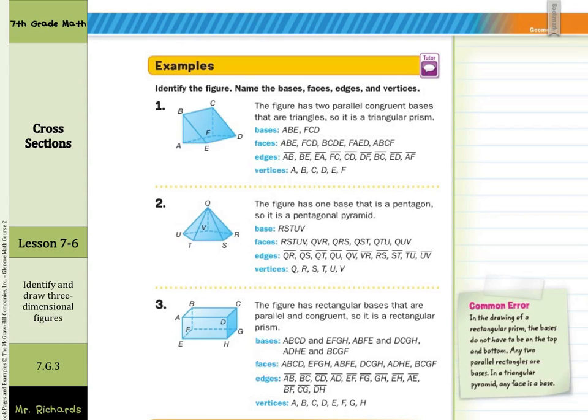So, one thing you're going to be asked to do in this lesson is to identify the figure by its name and then name the bases, faces, edges, and vertices. So, the figure here in example one has two parallel congruent bases that are triangles, so it's a triangular prism. Bases does not always mean bottom. That's going to be one of the things we're going to have to get over. Bases does not always mean bottom. So, we have these two triangular bases, and they are ABE, FCD.